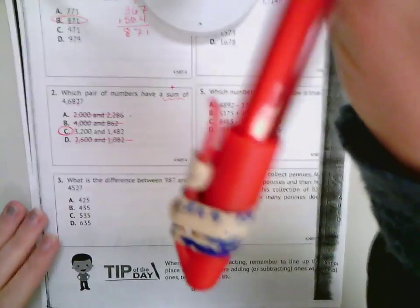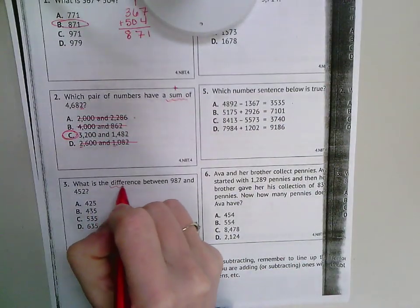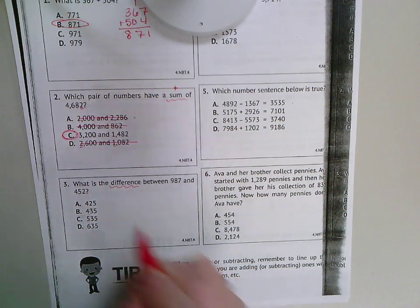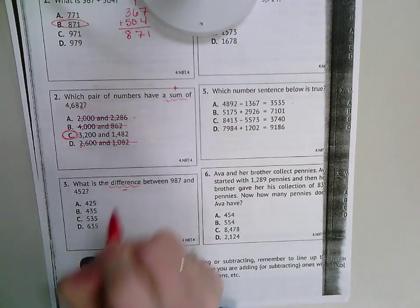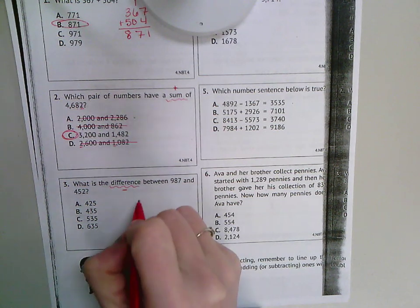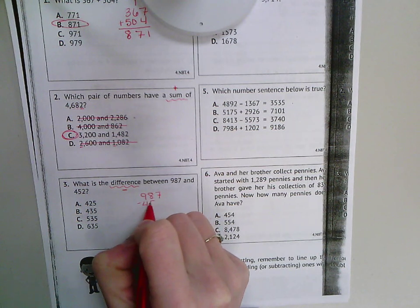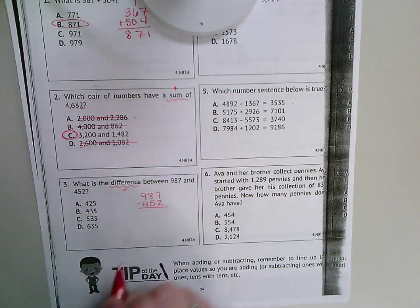Number three, what is the difference between 987 and 452? Difference means that I'm subtracting, so I need to set up that subtraction problem: 987 and 452.